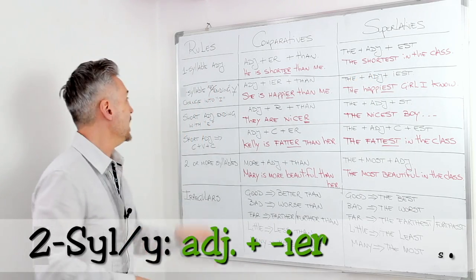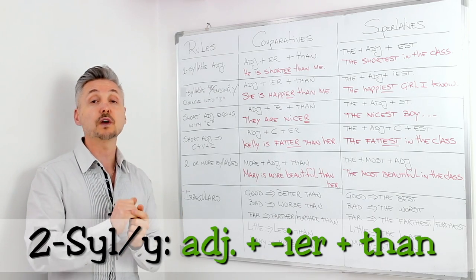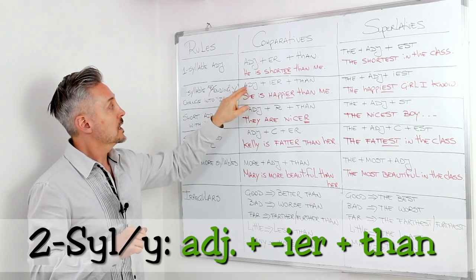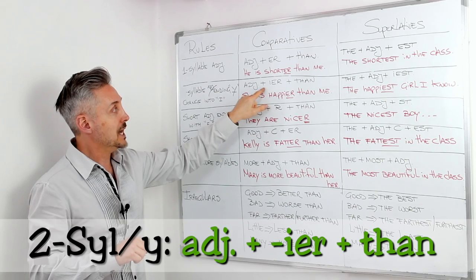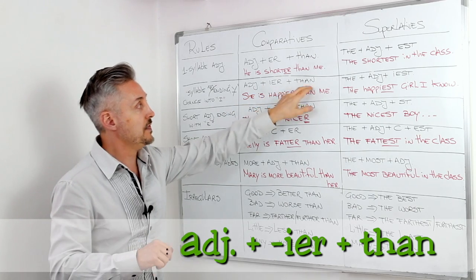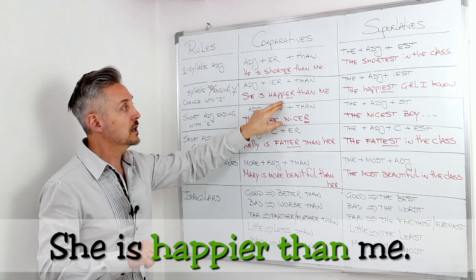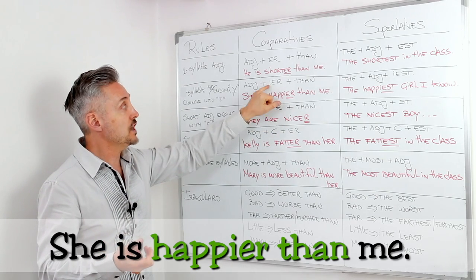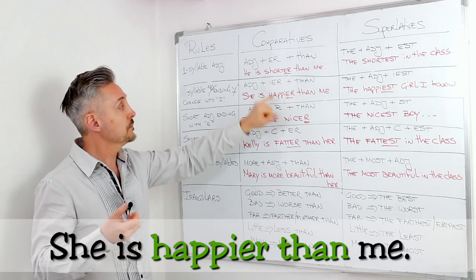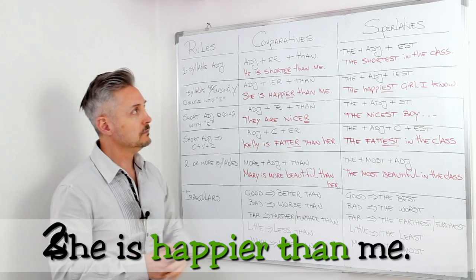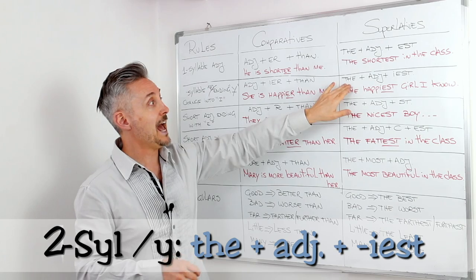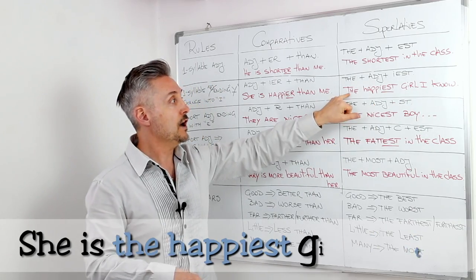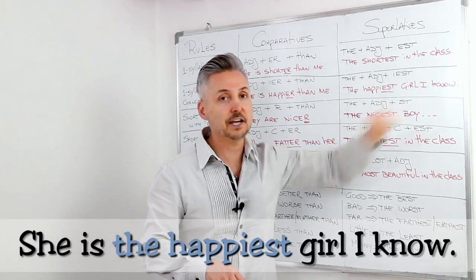So, the second rule is two-syllable adjectives ending with y change into i. For example, adjective plus i-e-r plus than. She is happier than me. So, happy is the adjective ending with y. We change the y into i, so happier than me. The superlative is the same. So, we add the article the, plus adjective plus i-e-s-t. The happiest girl I know.